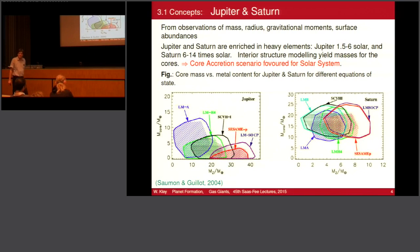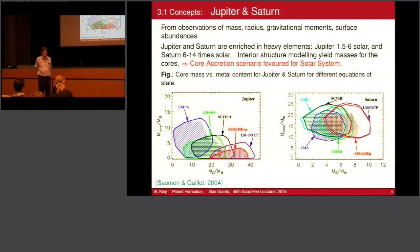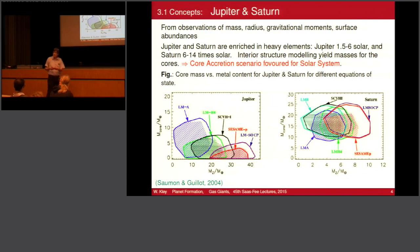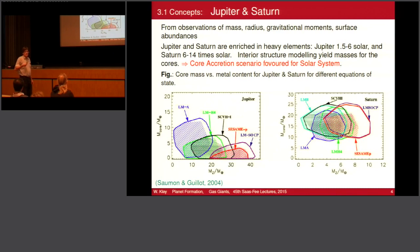I should explain gravitational moments — this cannot be measured from Earth. Mass, radius, and surface abundances can be measured from Earth. To measure gravitational moments — the deviation from a spherical gravitational field — you fly space probes to Jupiter. Jupiter is oblate because it rotates, so it's not spherical. This leads to a deviation from a spherical Newtonian potential. By analyzing higher-order terms in a Legendre expansion, you can infer something about the internal structure of Jupiter. This gives more information than just mass and radius, because mass and radius only give you the mean density.